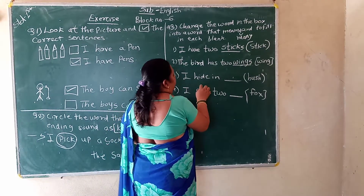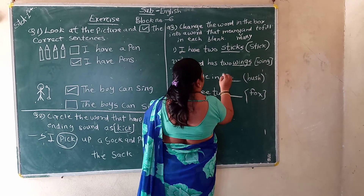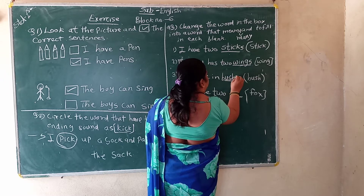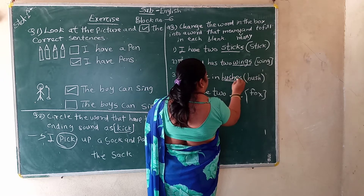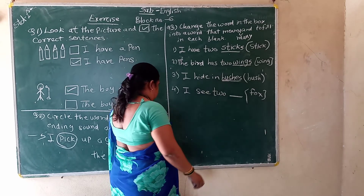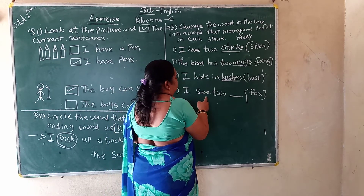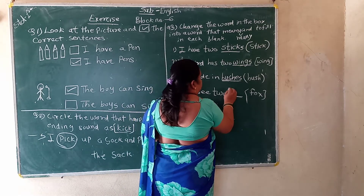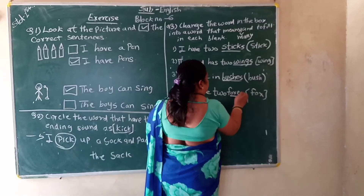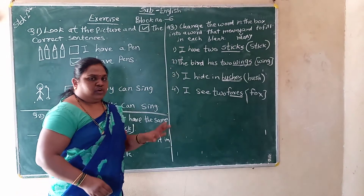Next: 'I hide in bush.' The plural is 'bushes' — B-U-S-H-E-S. So: 'I hide in bushes.' And the next one: 'I see two fox.' The plural is 'foxes' — F-O-X-E-S. So: 'I see two foxes.'